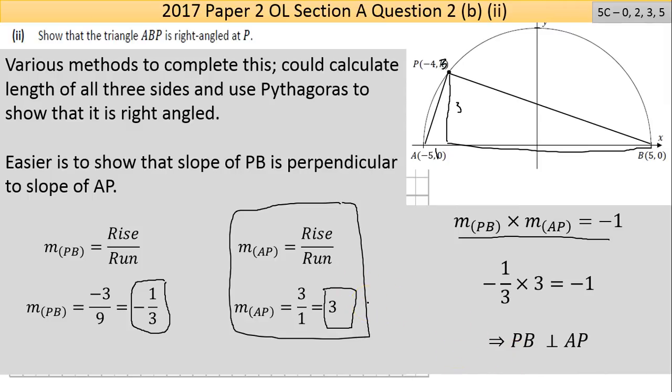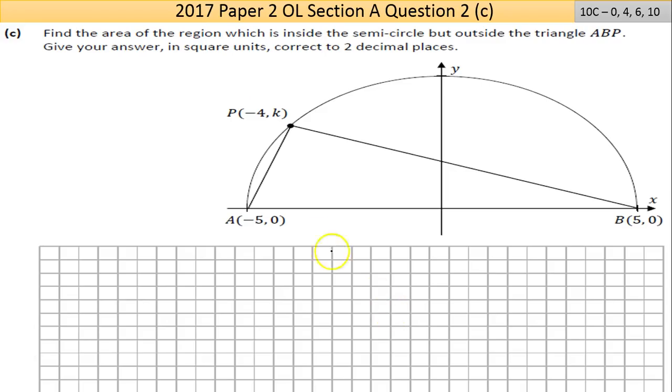There are even other ways to do that. This was the two in detail, the most common. Now part C here says find the area of the region which is inside the semicircle but outside the triangle. So that shaded area there. Give your answer in square units correct to two decimal places.